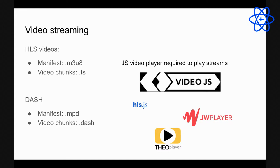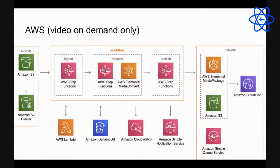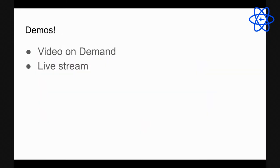You can build this whole infrastructure yourself — an uploading engine, encoding engine, hosting, delivery, player, analytics. For live streaming specifically, the goal is getting the video out as quickly as possible to minimize latency between recording and delivery. There are AWS schemes for encoding, hosting, and delivery, though there are many different ways to approach this.